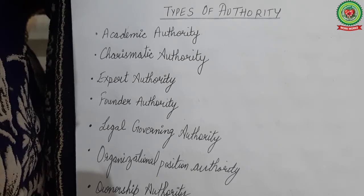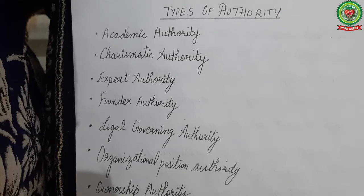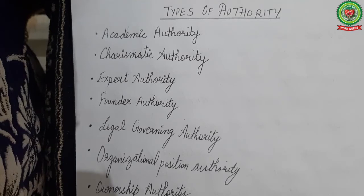Legal governing authority covers all the rules, regulations, and compliance requirements set by the government. Organizational position authority — also called acceptance authority — is where an individual decides what to do or accepts instructions and orders on their own will. Ownership authority is confirmed by superiority and also by popularity — how much popularity you have gained because of your activities and tasks.